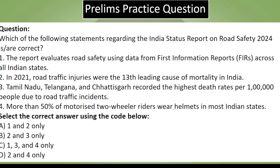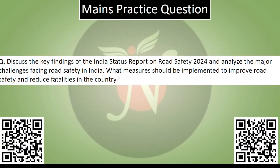Now for today's preliminary question: Which of the following statements regarding India's Status Report on Road Safety 2024 is correct? (1) The report evaluates road safety using data from the FIA. (2) In 2021, road traffic injuries were the 13th leading cause of mortality. (3) Tamil Nadu and Telangana recorded the highest deaths per 1 lakh people. (4) More than 50% of motorized two-wheeler riders wear helmets in most Indian states. Select the correct answer from the codes given below.